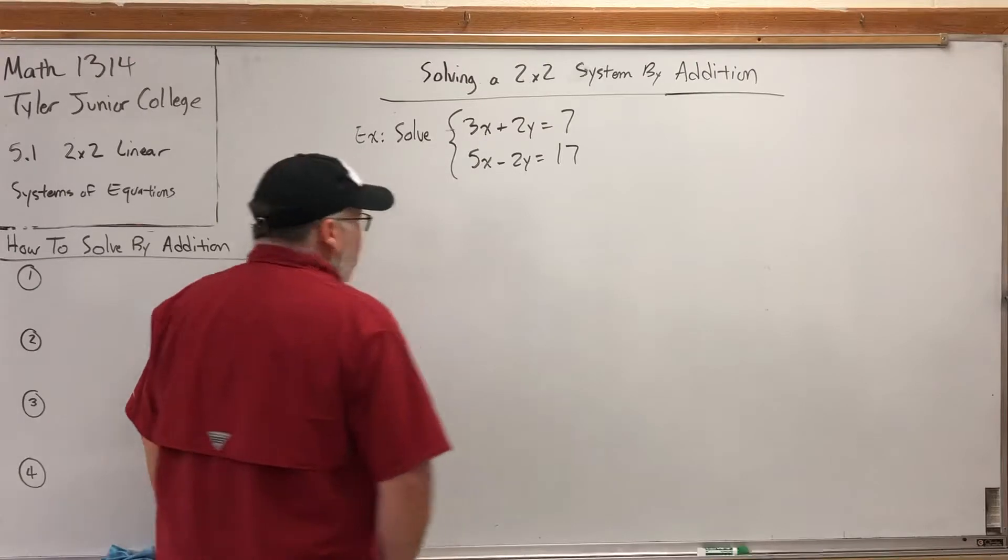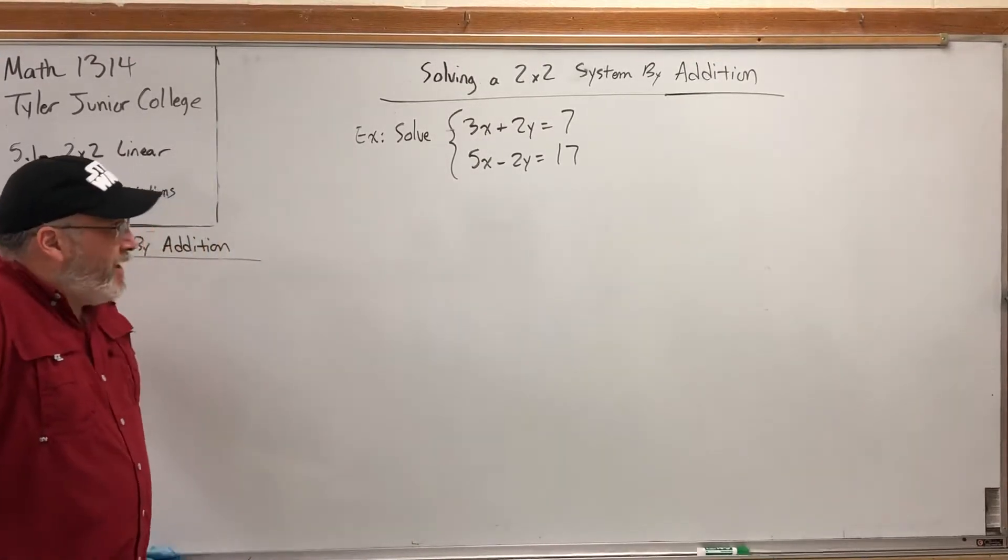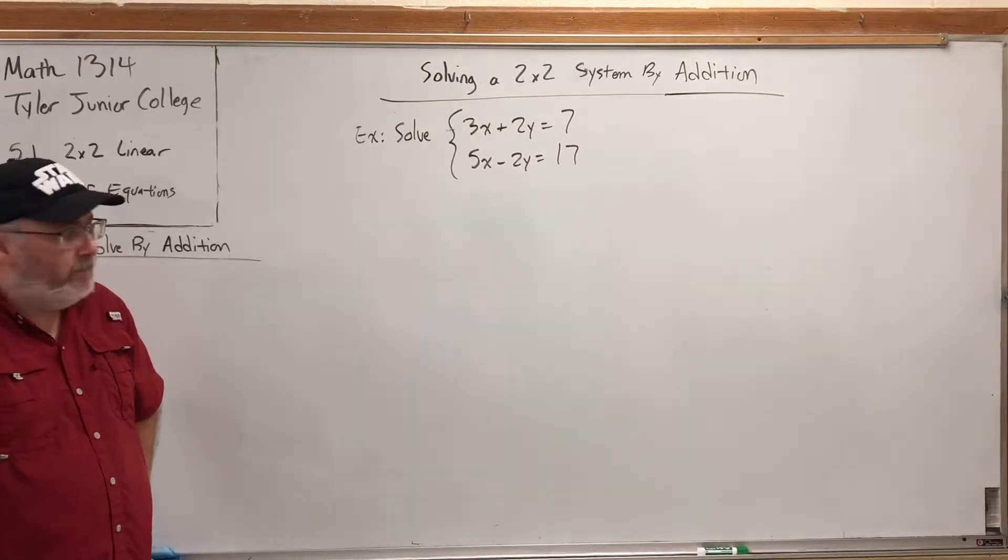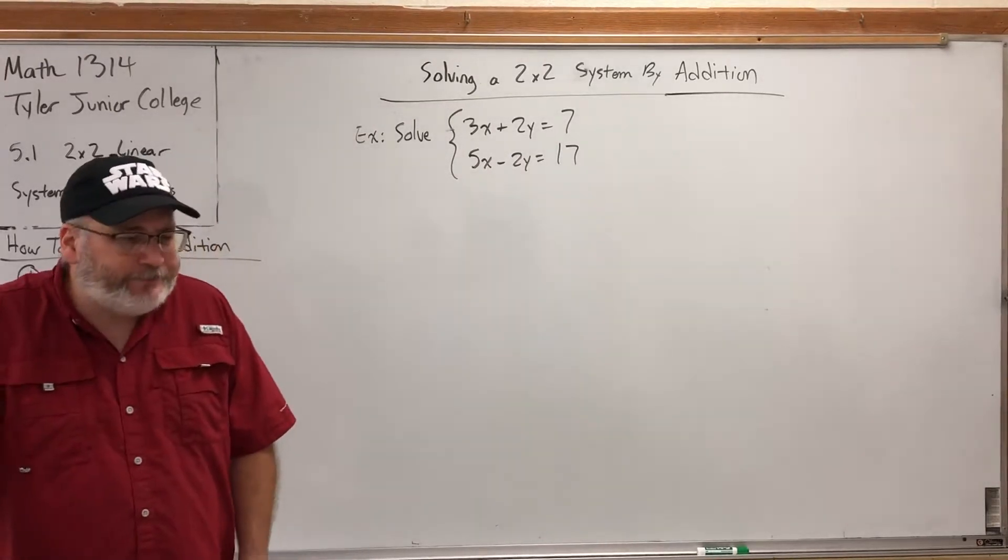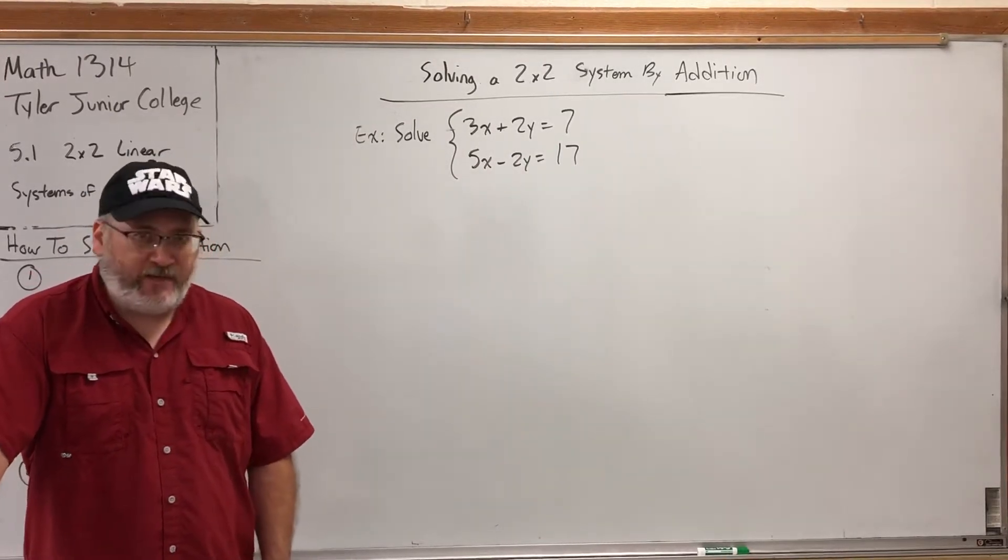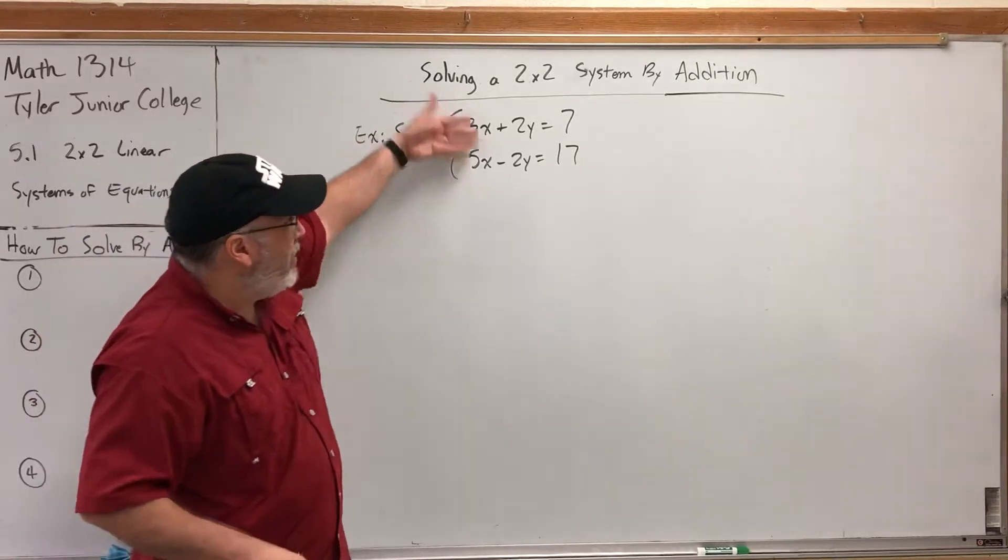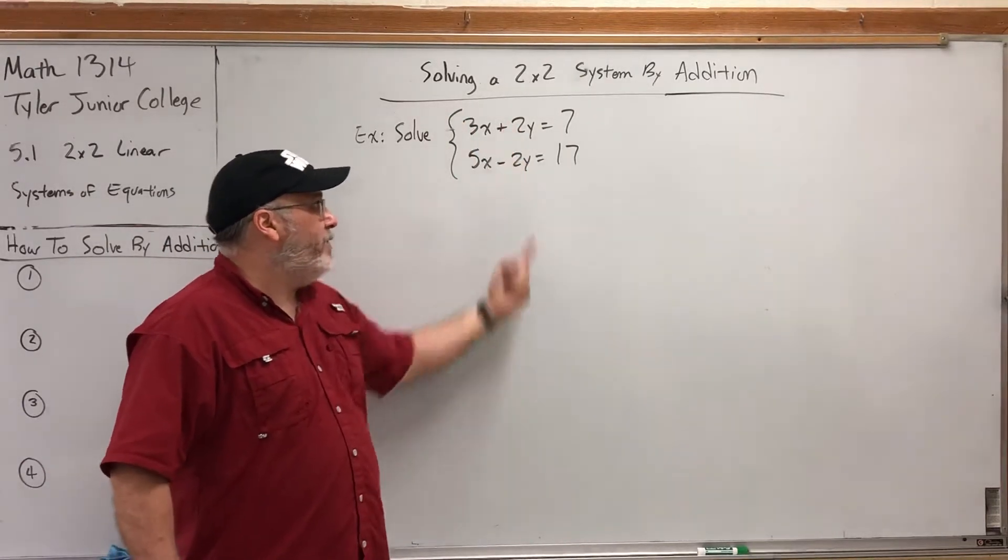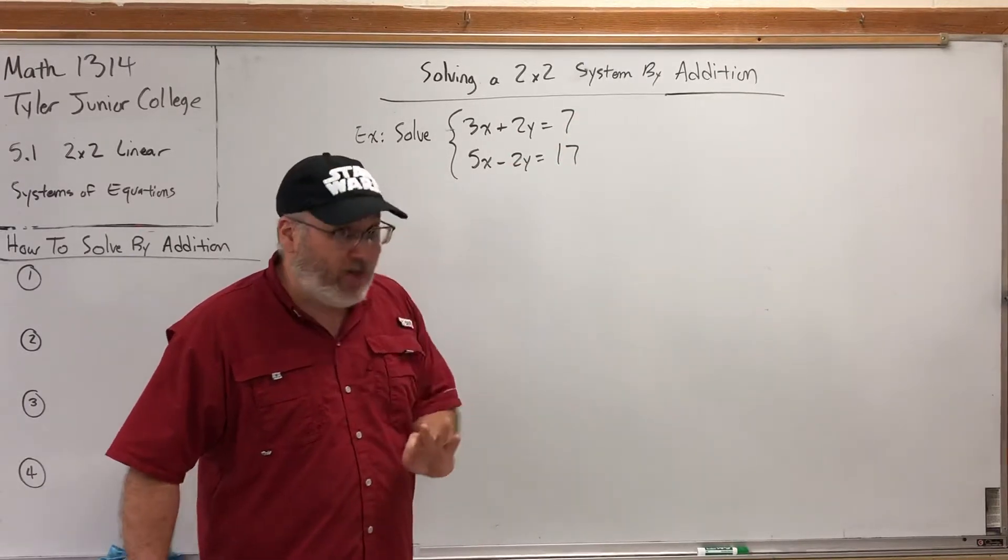You may have observed that this is the same system we solved before. There's something I can take advantage of in this system. The thing I can take advantage of is that the coefficient of the y's are opposites: positive 2y, negative 2y. How can I take advantage of that? I can add the equations together, provided everything is lined up. Provided like terms are lined up and the equal signs. My x's are lined up vertically, my y's are lined up vertically, my constants are lined up vertically, and the equal signs are lined up vertically.